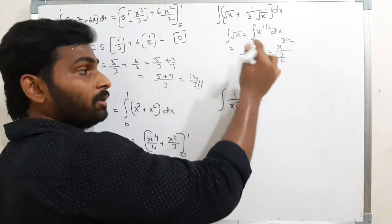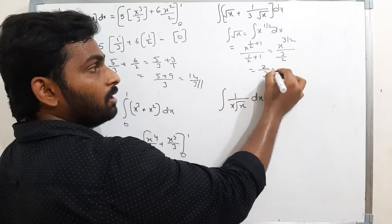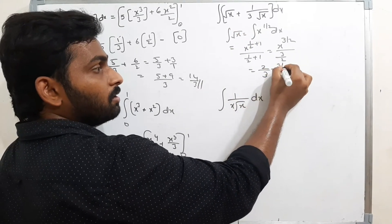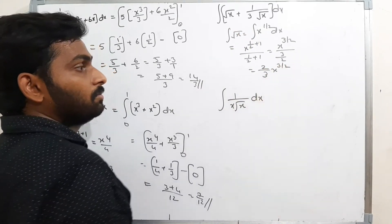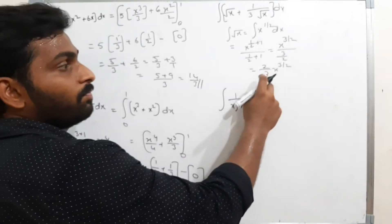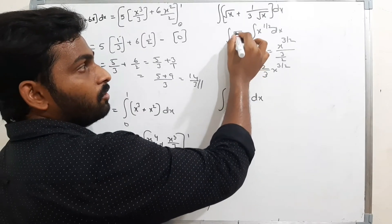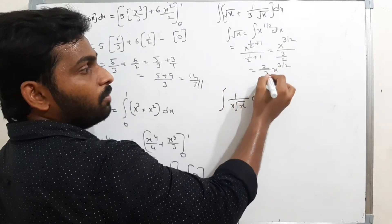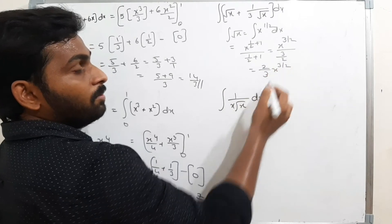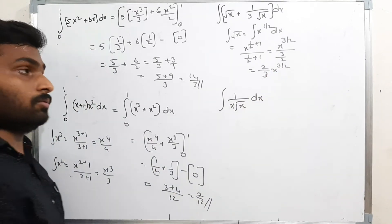When 3/2 in the denominator goes to the numerator it becomes 2/3. So the integration of √x is (2/3)x^(3/2). Remember this result.